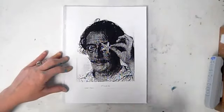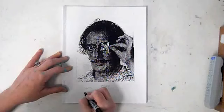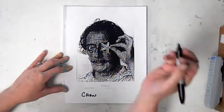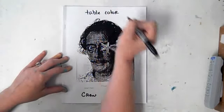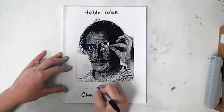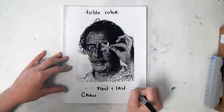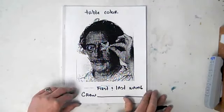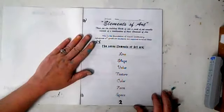8th grade elements of art, this is your packet. I want you to go ahead and put your first and last name on here, and also please put your crew name and your table color at the top.